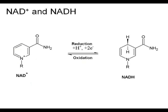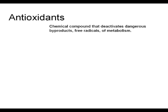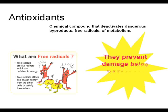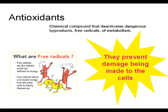Antioxidants are chemical compounds that deactivate dangerous byproducts of metabolism — these byproducts are called free radicals. Free radicals can cause damage to membranes and DNA. Antioxidants inhibit the oxidation of other molecules, and in doing so, they preserve important molecules needed in metabolism.